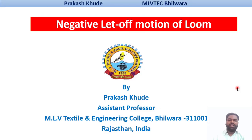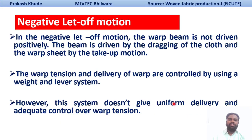We will basically talk about the negative let-off motion. In my last video, we have basically seen the objective of the let-off motion — what are the different types of let-off motion, that is negative let-off and positive let-off. So now you will see the working principle of your negative let-off. In negative let-off motion, the warp beam is not driven positively. The warp beam in this case is driven by dragging of the cloth and the warp sheet by the take-off motion.